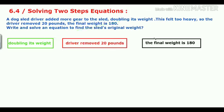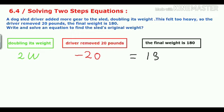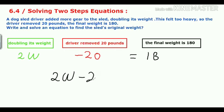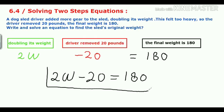We take the useful information to build the equation. Doubling the weight means multiply by 2, so we have 2 times w, where w is the weight. The driver removed 20 means minus 20. The final weight being 180 means the result equals 180. So the equation is 2w minus 20 equals 180.